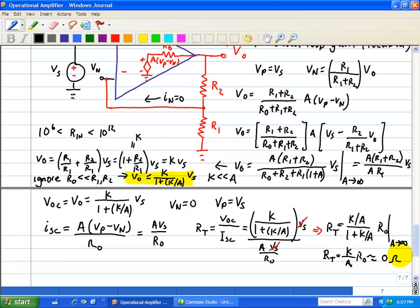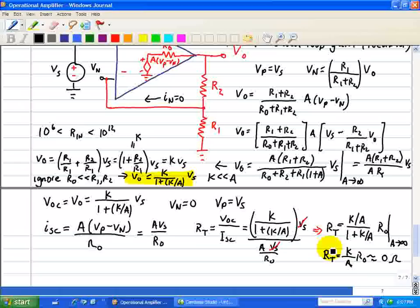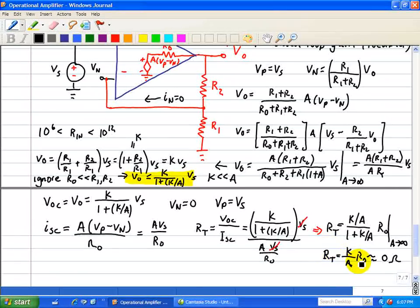So with feedback applied to this op-amp circuit, we reduce the output resistance of RO, which is already small, to almost 0 ohms when we apply feedback to this op-amp circuit.